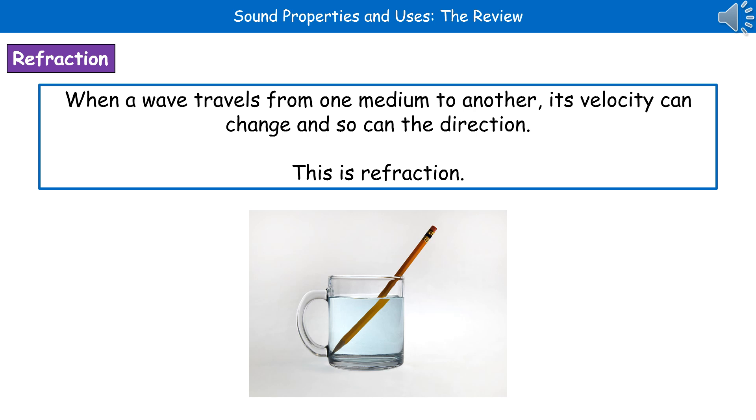The first thing that could happen is something called refraction. I've given you a little picture at the bottom to demonstrate this. You can see a pencil in a glass of water, but it doesn't look like it's in line anymore. That's because we've refracted the wave. The wave is traveling from one medium, air, into another medium, water. As a result, the velocity and the direction have changed to give us a different image.